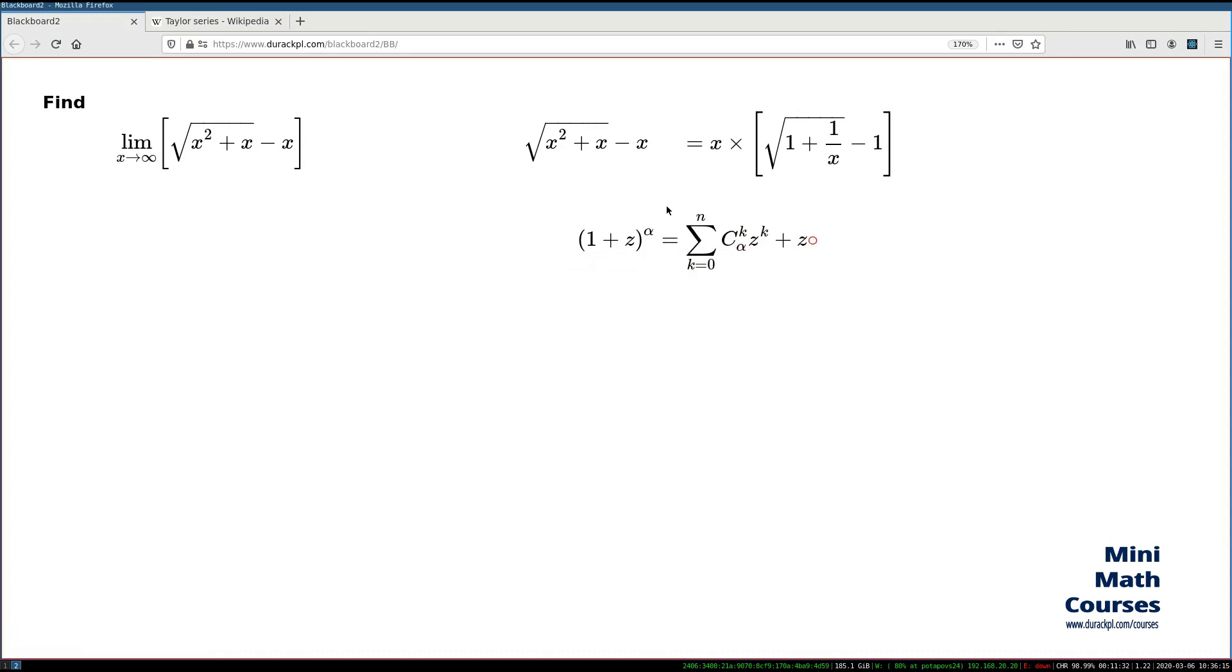It expands into two parts: the Taylor polynomial with binomial coefficients and the Taylor remainder which I present in a very simple form. It's the nth power of z times the epsilon function of which I need to know only one thing: the limit of this function is zero once z approaches zero.